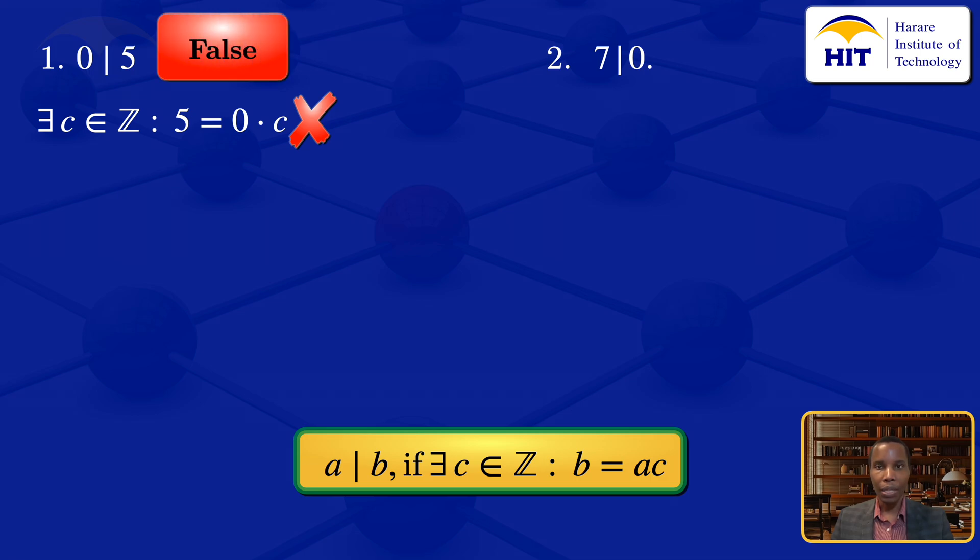So it is false that 0 divides 5. I now move on to looking at 7 divides 0.